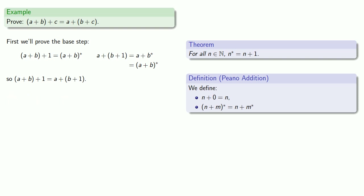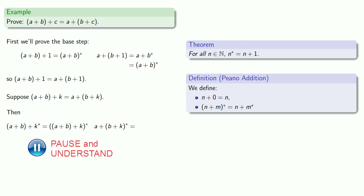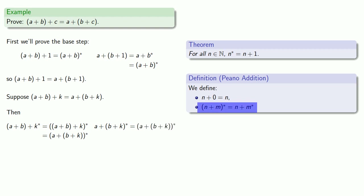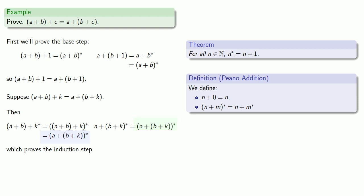Let's consider our induction step. Suppose that our statement is true for k; we want to show that it's true for k star. Let's compare a plus b plus k star to a plus b plus k star. Definitions are the whole of mathematics, all else is commentary. When I add the successor, it's the same as the successor of the sum. Our assumption that the statement is true for k means this is the successor of a plus b plus k. Again, when you add a successor, it's the same as the successor of the sum. So we have our proof of the induction step — a plus b plus k star and a plus b plus k star are the same thing. So we have associativity.